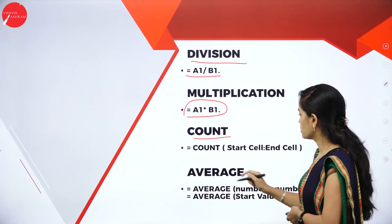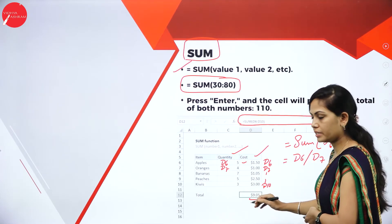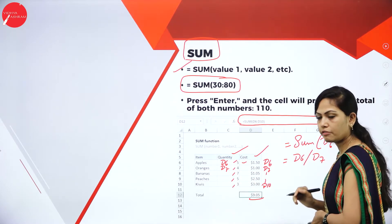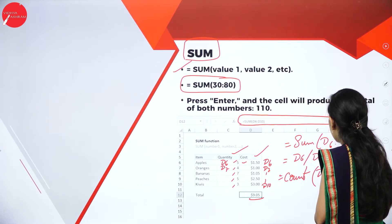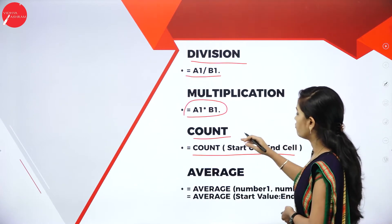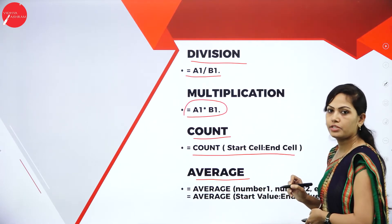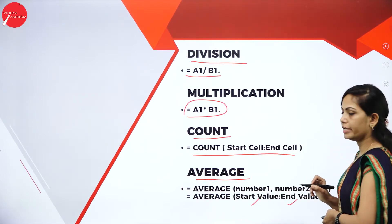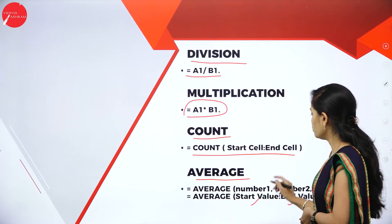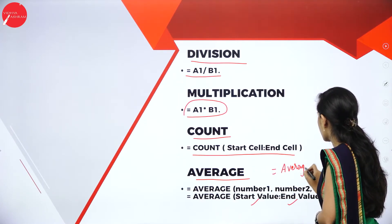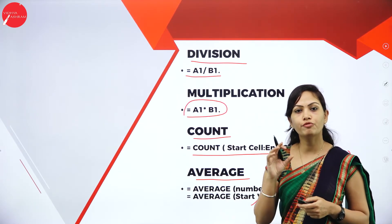For counting values, the syntax is =COUNT(start cell, end cell). For example, how many values are there: 1, 2, 3, 4, 5. Use =COUNT(D6:D7) with the start and end cell addresses. For finding the average, use =AVERAGE(start value, end value). For example, =AVERAGE(D6:D10) will give the average value. It is very easy to use formulas in Excel.